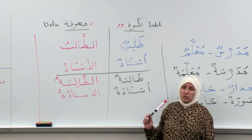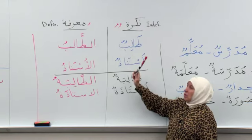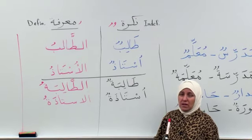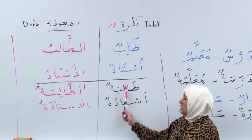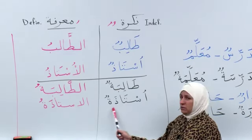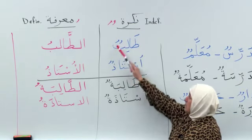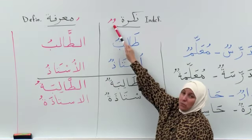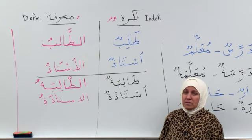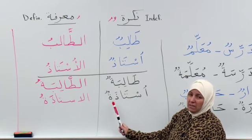Let's see how the sound changes. With نكرة, the indefinite, you will have an 'on' sound. You have two dhamma — تنوين with the 'on' sound. For example: طالب, a student; أستاذ, a professor; طالبة, a female student; أستاذة, a female professor. With تنوين these become: طالبٌ، أستاذٌ، طالبةٌ، أستاذةٌ.